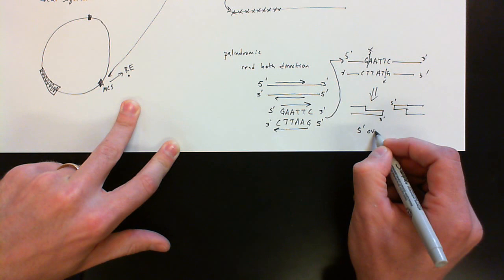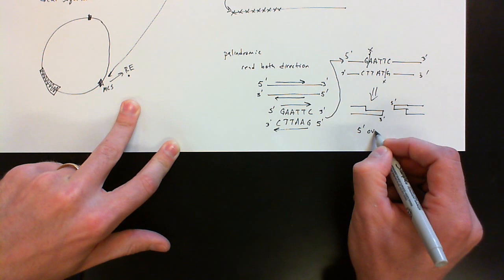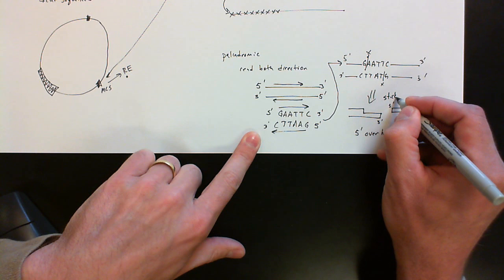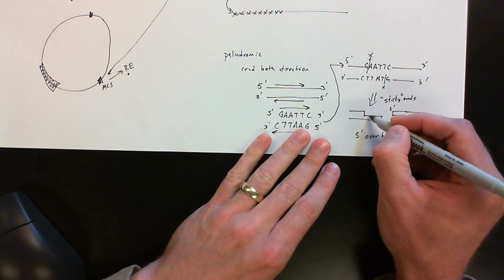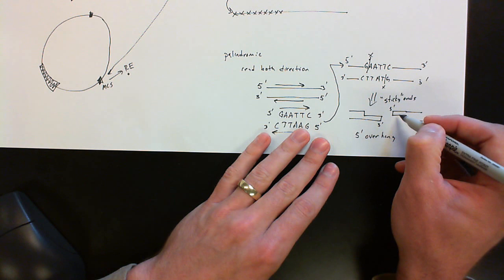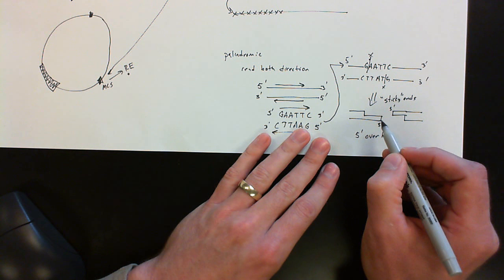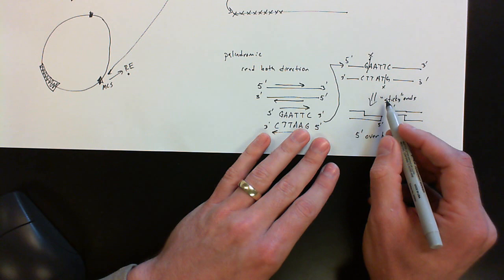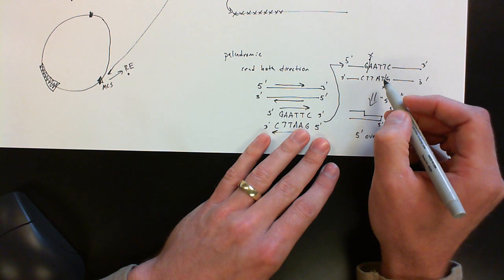This is useful because now what we have are what we call sticky ends. So these ends, remember there's nucleotides sitting here. And so if they match up with their complement, they will stick together. And because it's the 5' that's overhanging, we call them typically 5' overhang. Now most nucleotides do do this. There are some that do cut blunt, so straight through. But the ones that we typically will take advantage of in the lab are ones that create sticky ends.